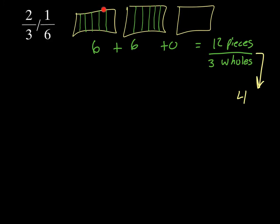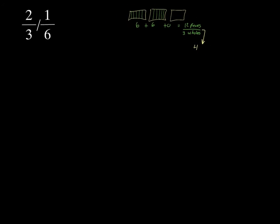One way you may have done this is to draw 3 holes and then separate 2 of them into 6 parts because we only have 2/3. So 2 out of the 3, and then we have 6 parts from this one and 6 parts from this one and 0 parts from this one, so we have 12 pieces and we have 3 pieces or 3 holes altogether, which gives us 4. That's one way that you may have done it.